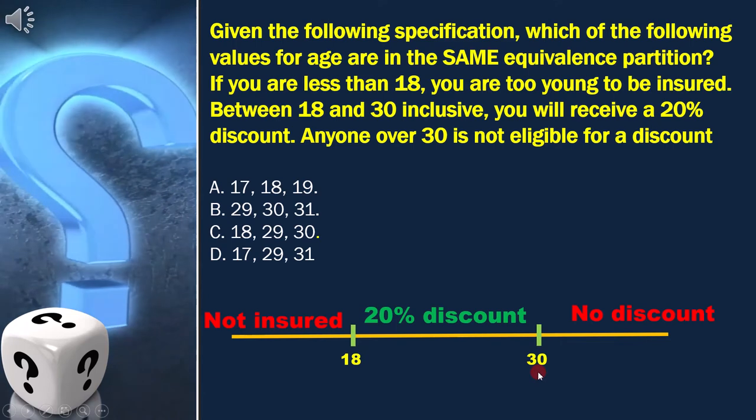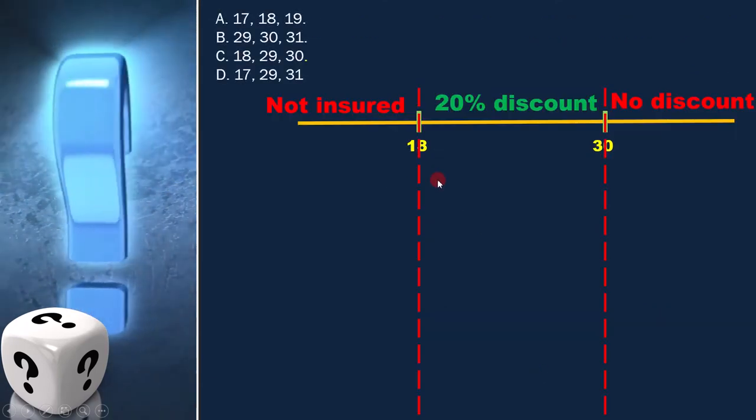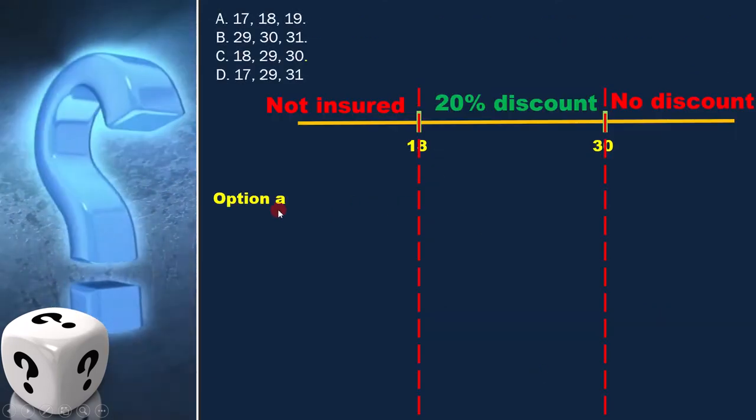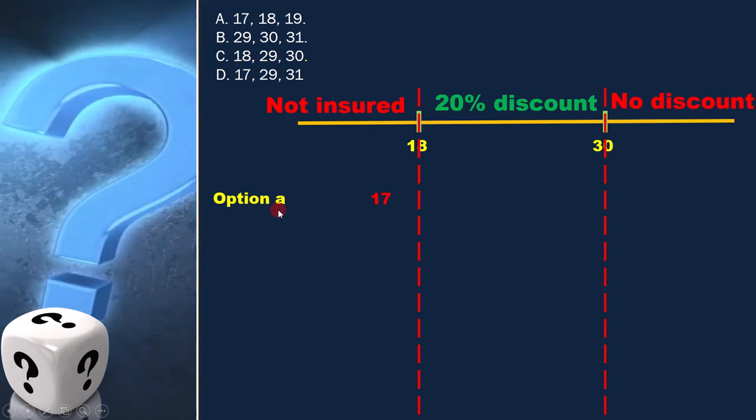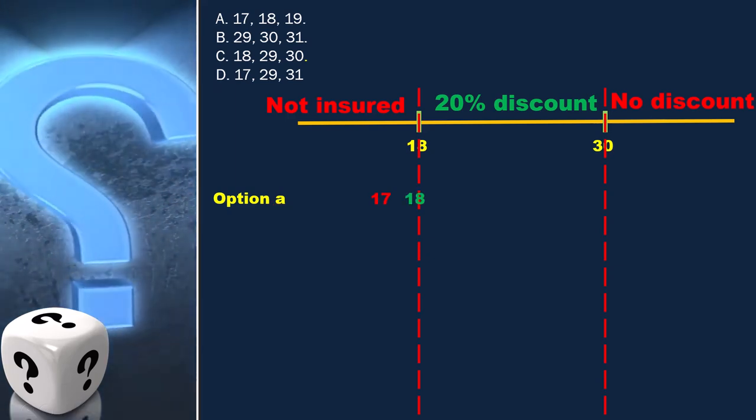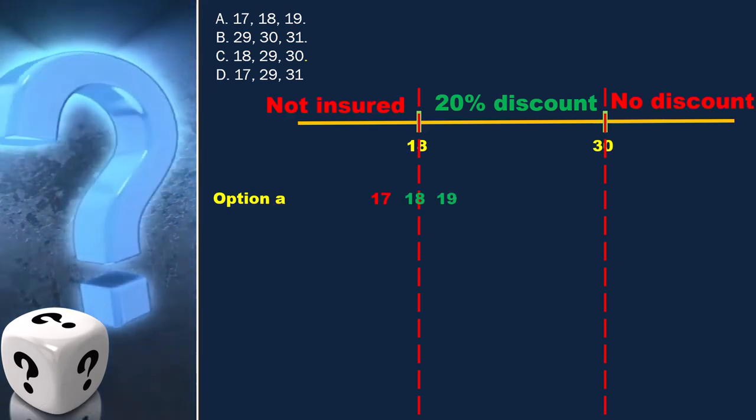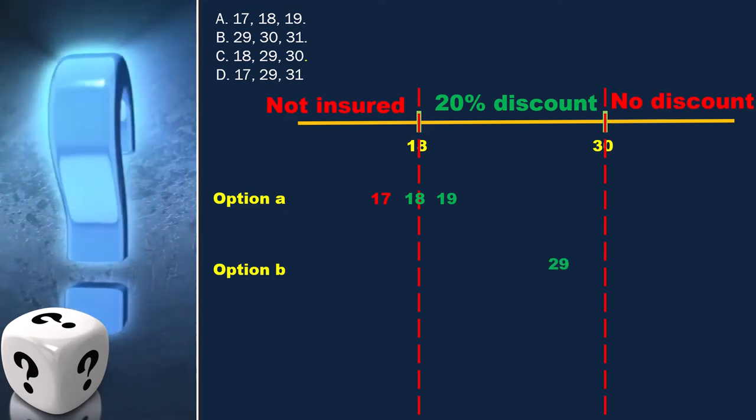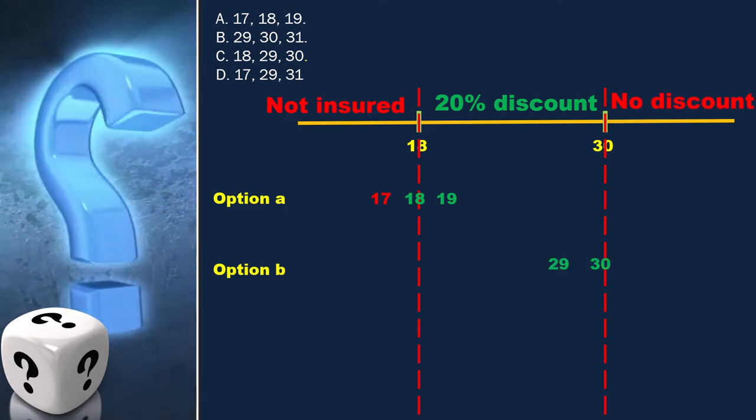This is how we have to draw the equivalence classes diagram. Option A is 17, 18, 19. Option B is 29, 30, 31.